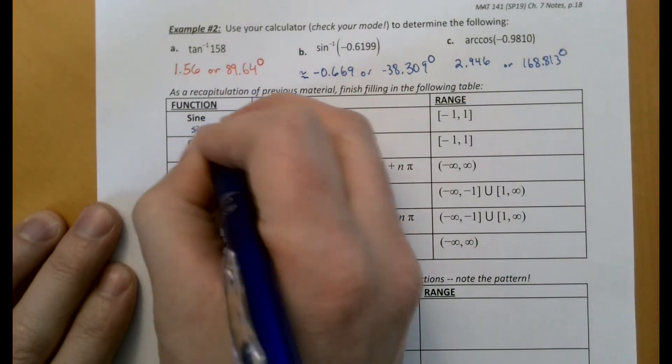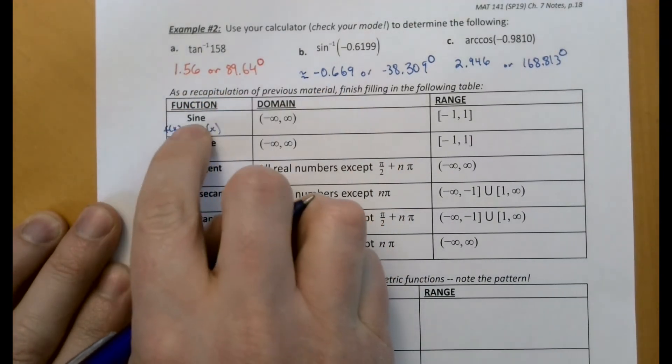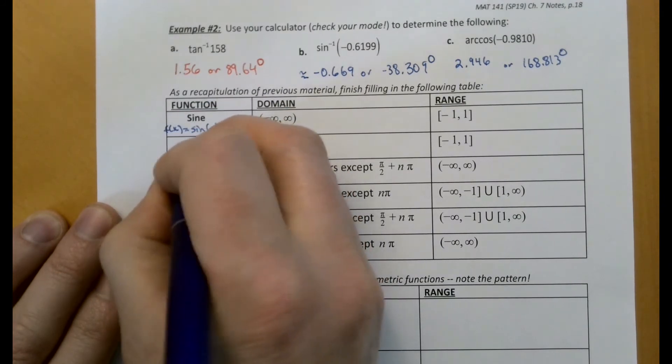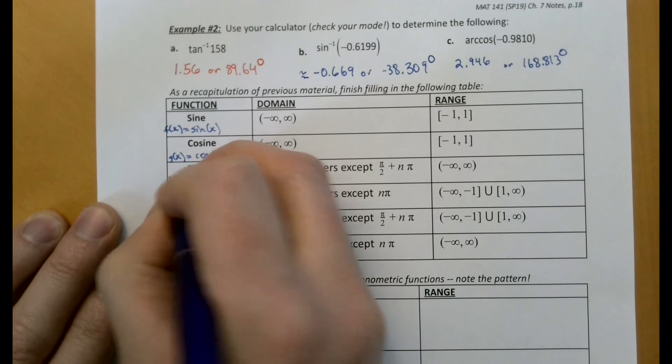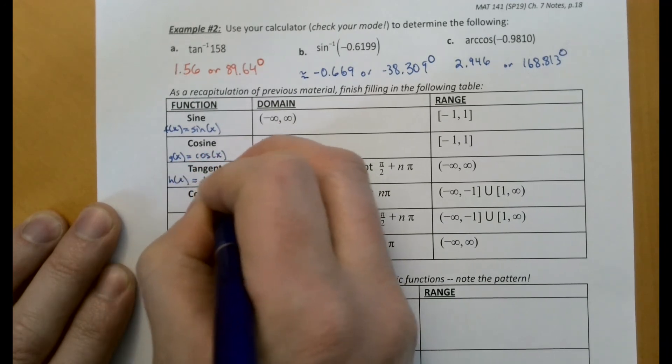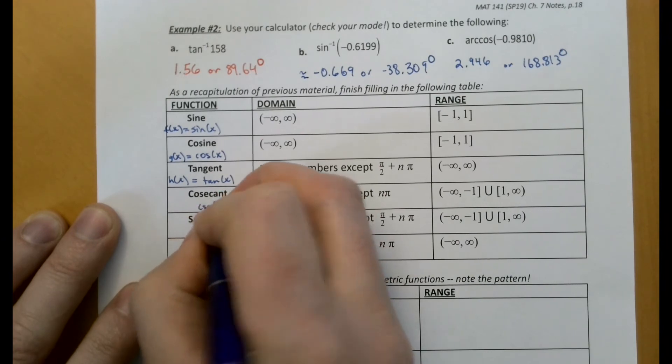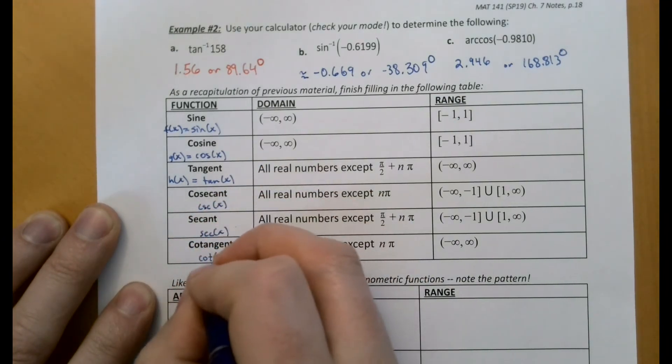So let me write the functions in here because this is how we spell them if we were to write them out. So cosine x, h of x equals tangent x, and then this is cosecant of x, secant of x, and cotangent of x.